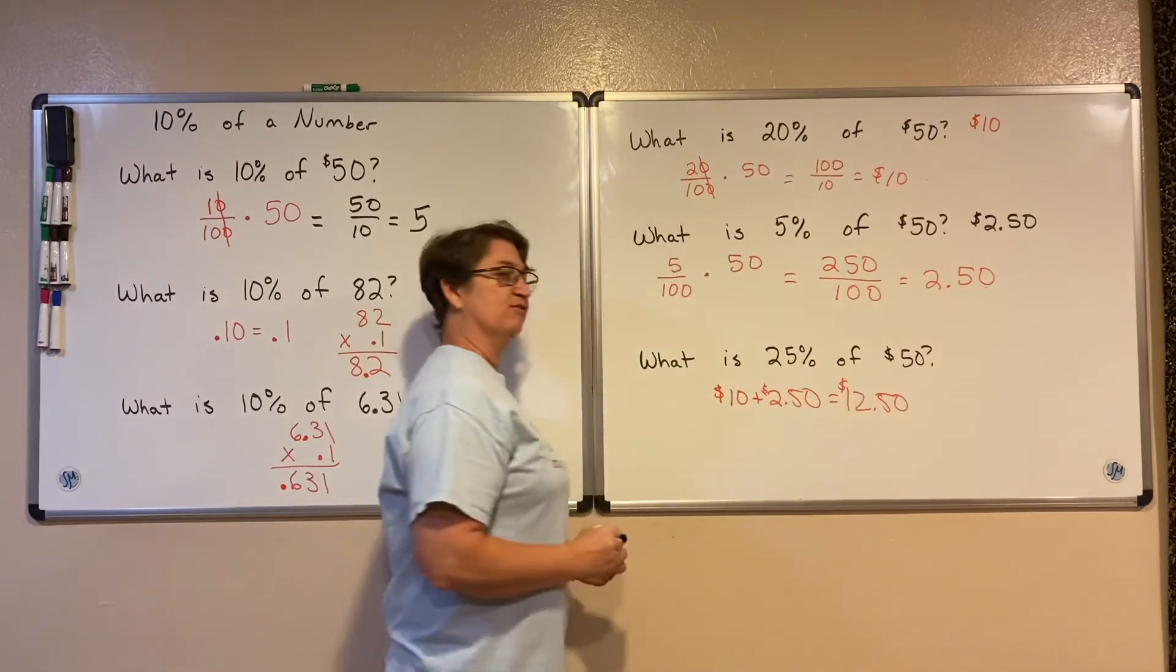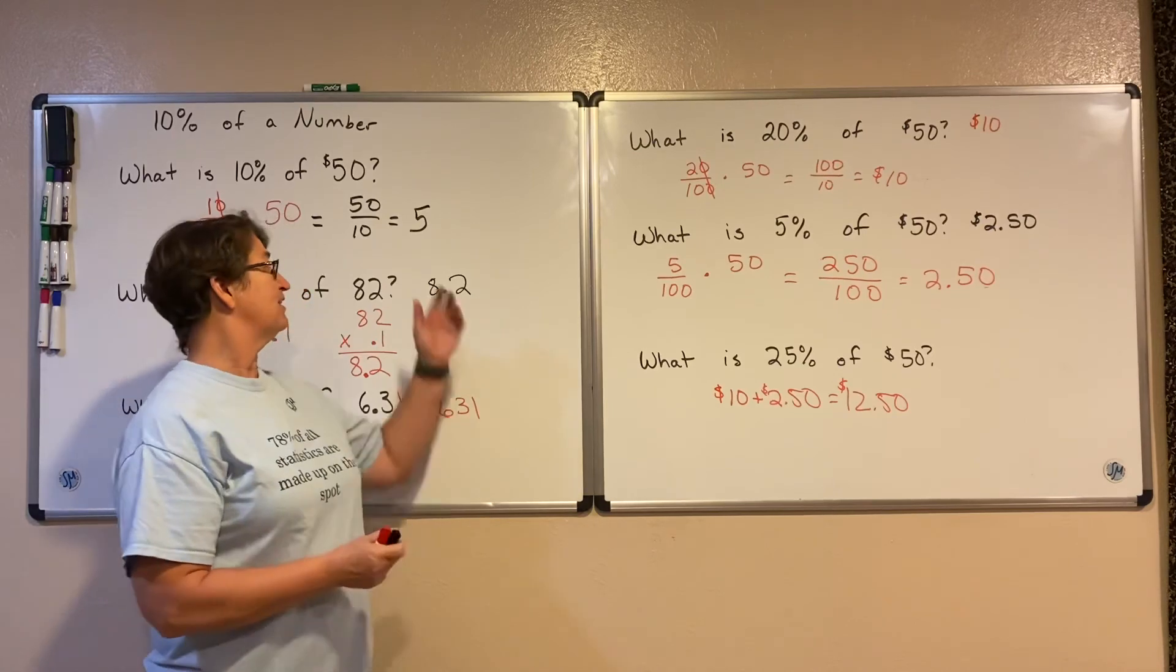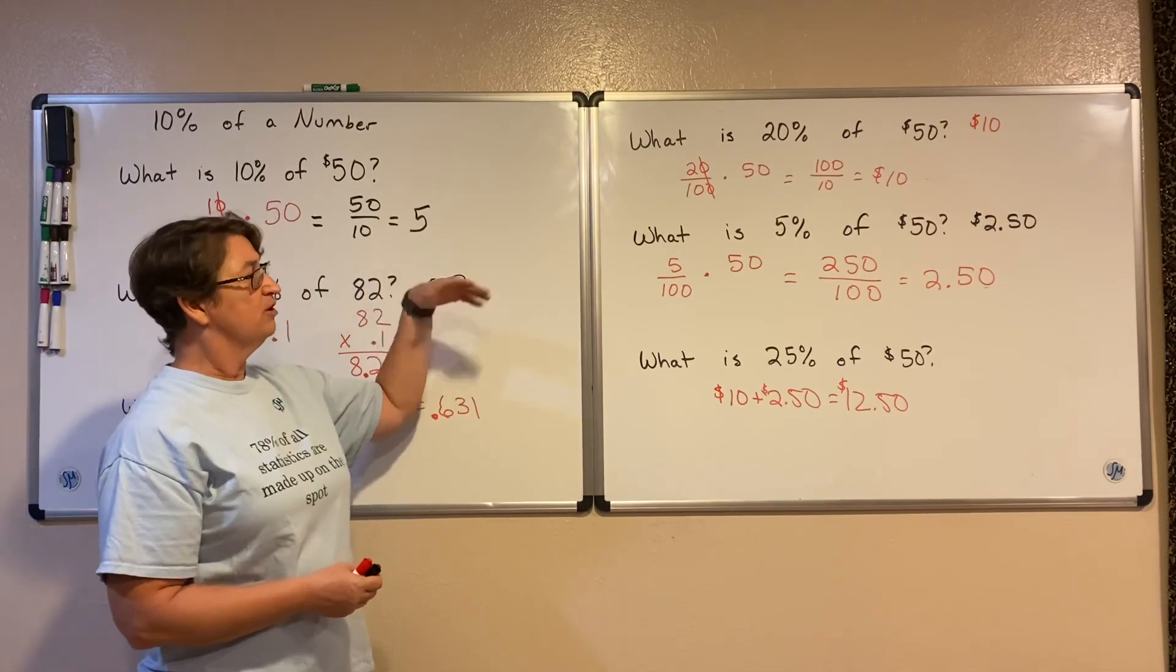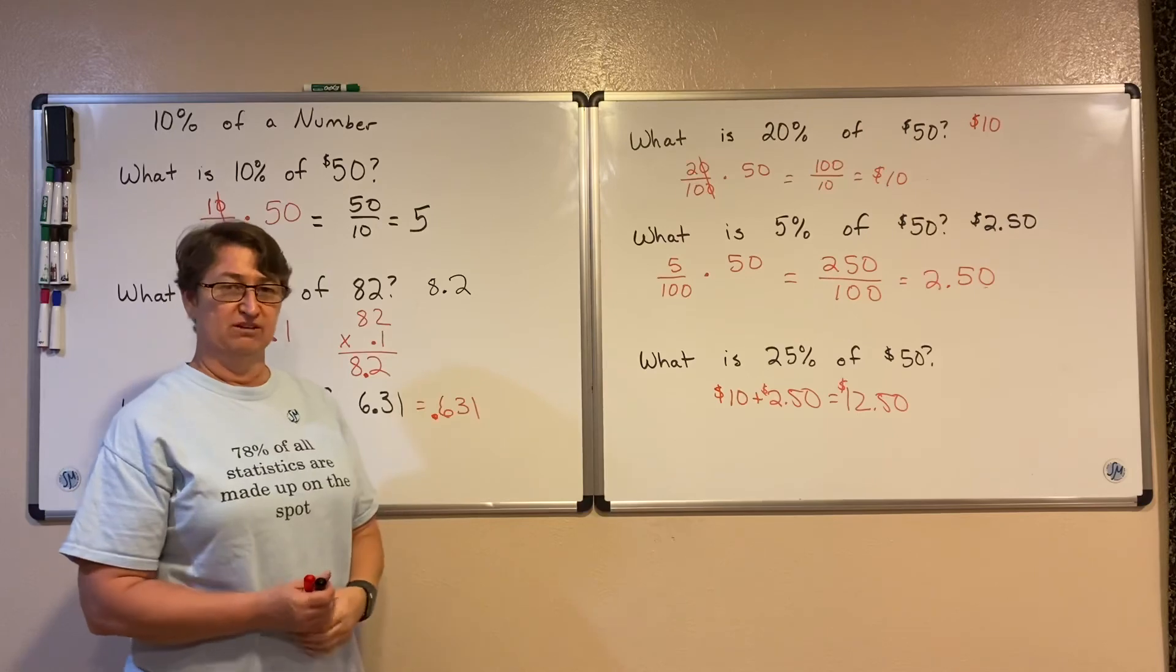So if I wanted to leave a 25% tip, I could just take my 10%, which is easy to figure, double it, half it, and add those pieces together.